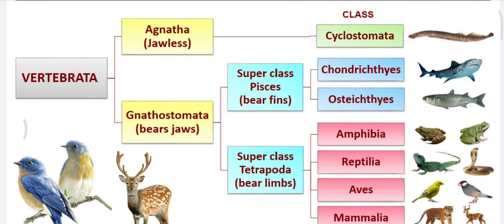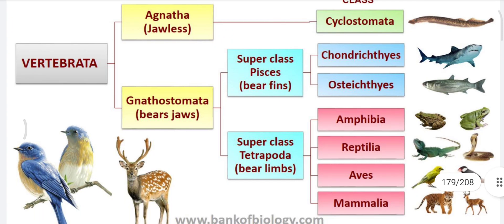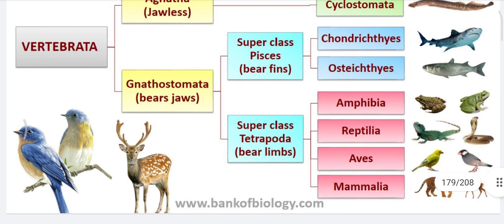Pisces have fins, while Tetrapods have limbs. The superclass Pisces is divided into Chondrichthyes and Osteichthyes — these are the two classes. The superclass Tetrapoda is again divisible into four classes: Amphibia, Reptilia, Aves, and Mammals.